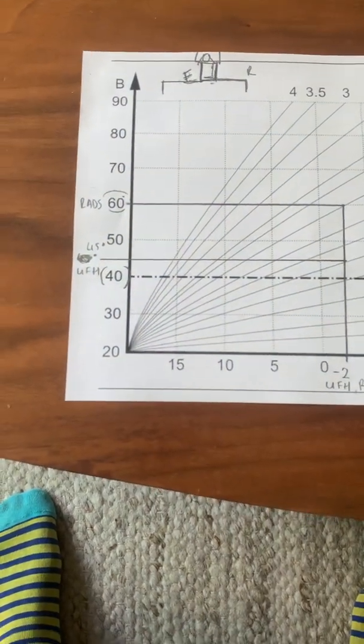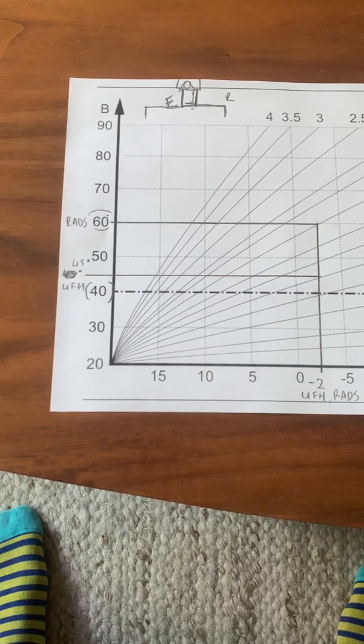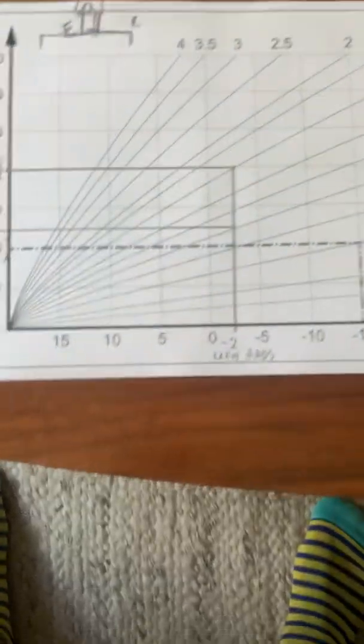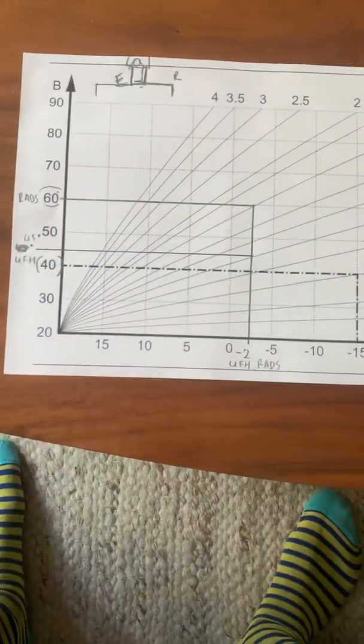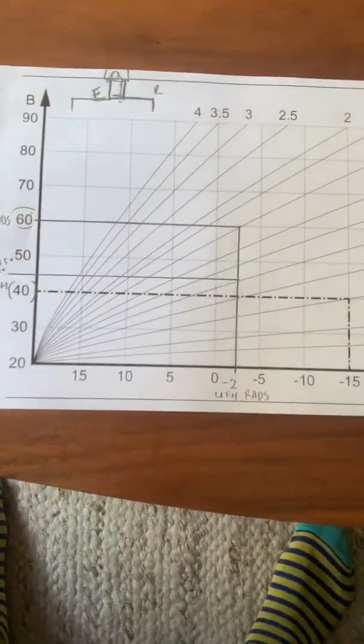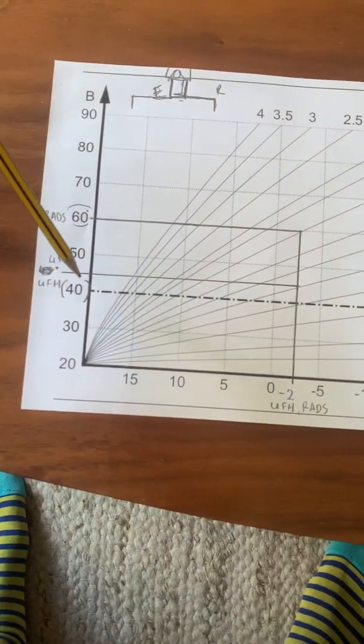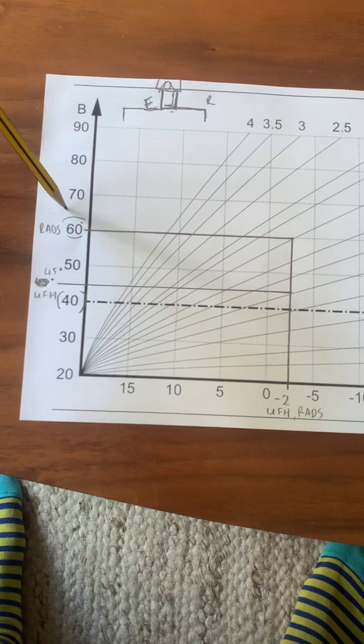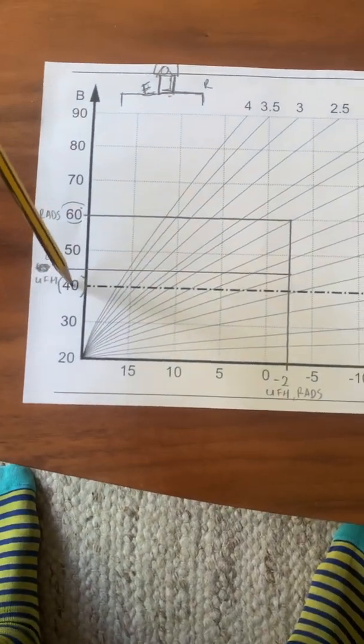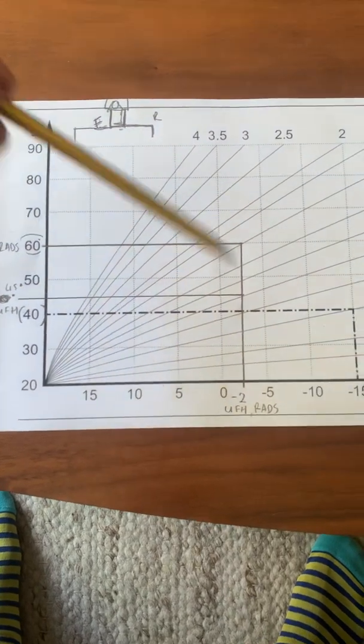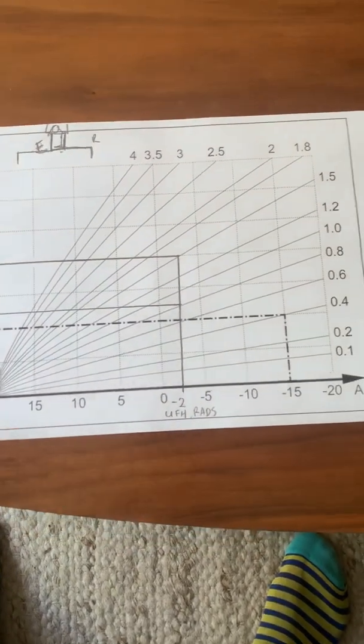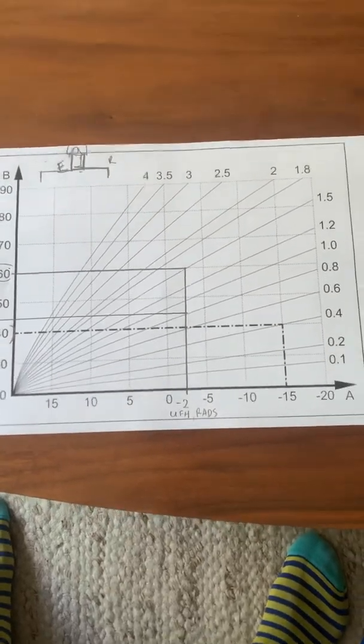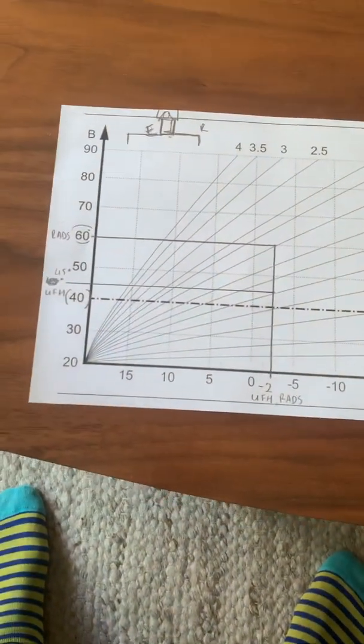So as long as you have a boiler that can reduce enough kilowatts for the load, and your emitters are balanced so they all get the 60 degree flow at the radiators and all the loops get their 40 degree flow at the manifold, and then you have a decent return on all of them, then theoretically you'll end up with a nicely toasty house and you can walk around in these funky socks. Hopefully that helps.